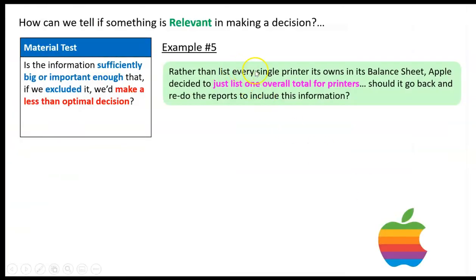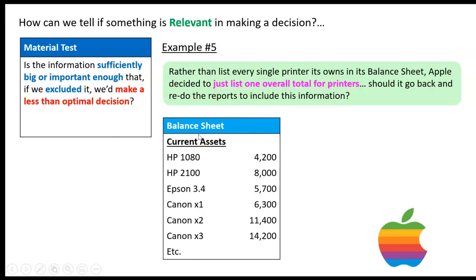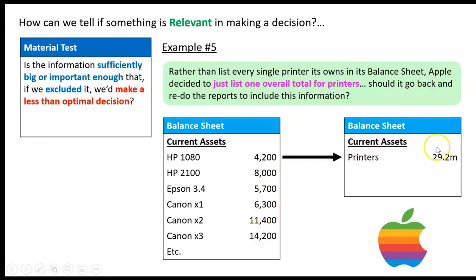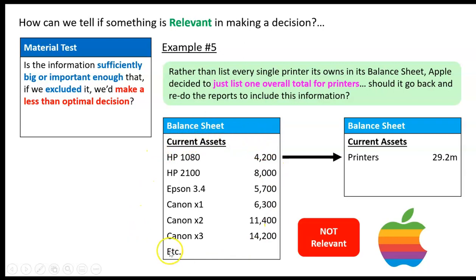Last example: rather than list every single printer Apple owns in its balance sheet, Apple decides to list one overall total for printers. Should it go back and redo the reports? Apple has offices throughout the world with potentially a million printers — an HP 1080, an HP 2100, an Epson, and so on. Should we list them all separately, or just list one item called 'printers' with the overall amount? I think that's okay. Having every single printer listed would actually confuse you — it's too much information. That detail is not relevant. I just need to know the total value of Apple's printers, and that will help me make a good decision.